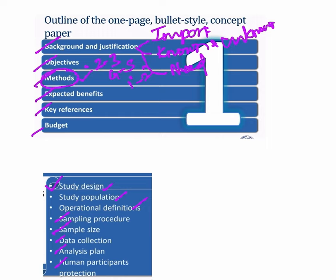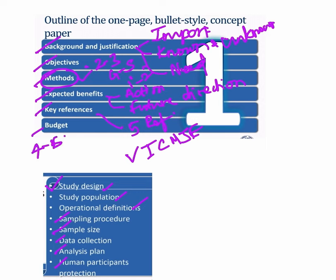Then we need to mention the expected benefits, immediate action with our results, and future direction of the research. Under key references, we should not have more than five references and we should follow the International Committee of Medical Journal Editors style. Budget needs to be mentioned in four to five lines and need not be a full justification of your study.